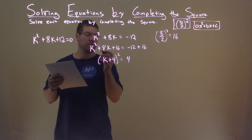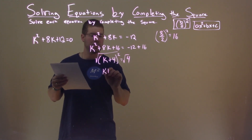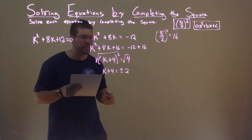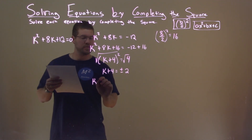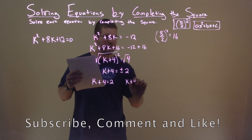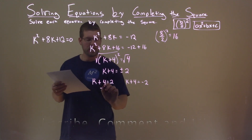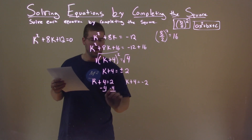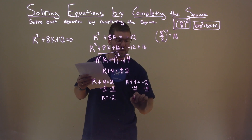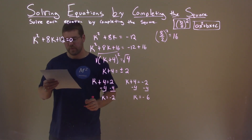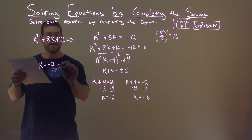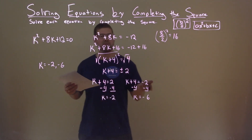We take the square root of both sides, and we have K plus 4 equals the square root of 4, which is plus or minus 2. Breaking this into two equations: K plus 4 equals positive 2, and K plus 4 equals negative 2. Subtracting 4 from both sides: K equals negative 2. Subtracting 4 from both sides: K equals negative 6. So K equals negative 2 and negative 6 — that is our final answer.